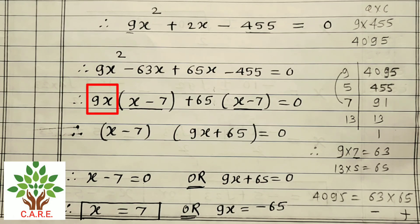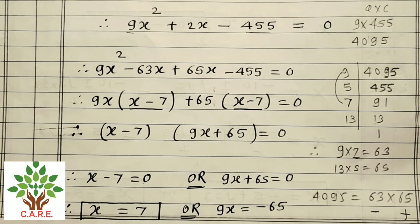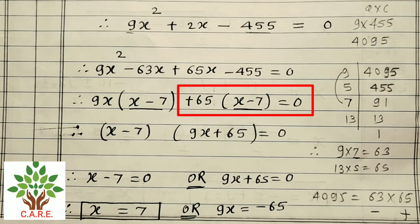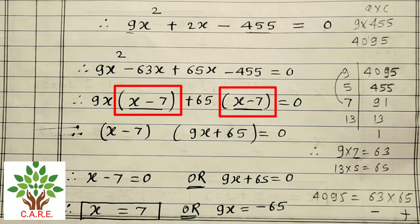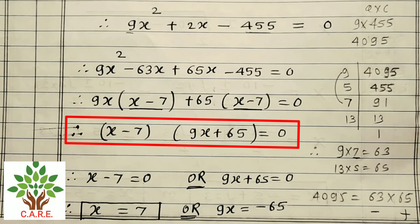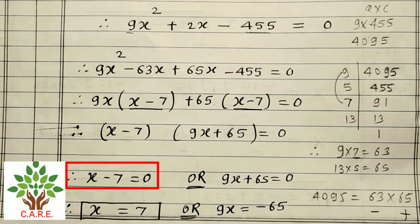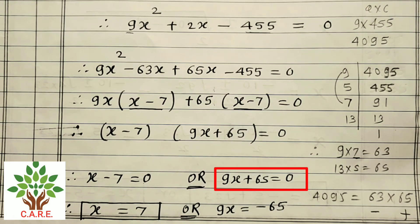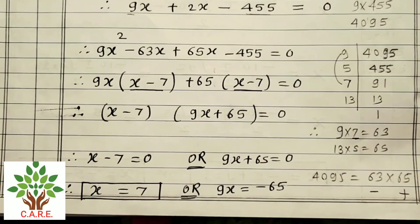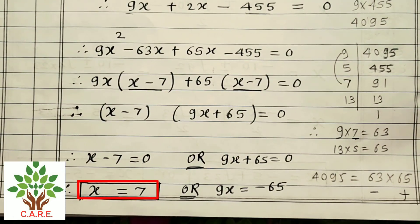Taking common factor 9x from the first bracket: 9x(x − 7) + 65(x − 7) = 0. Taking (x − 7) as common: (x − 7)(9x + 65) = 0. Therefore, x − 7 = 0 or 9x + 65 = 0.